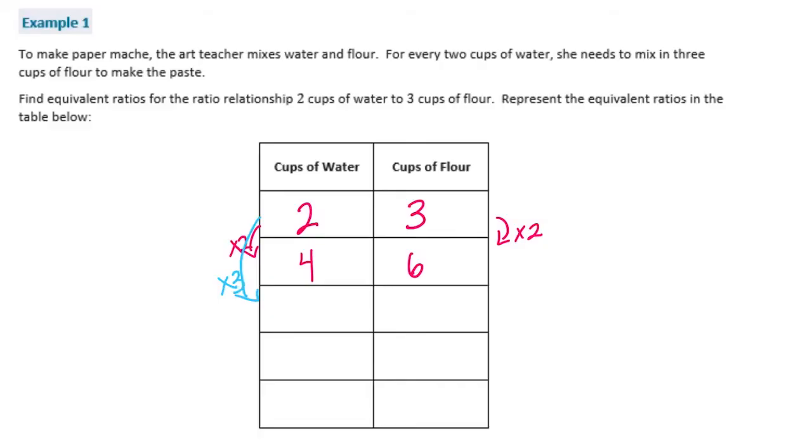If I want to do it again, so now let's multiply by 3. 2 times 3 is 6. If I multiply by 3 here, 3 times 3 is 9. So 6 to 9 is another equivalent ratio. Now let's multiply by 4, but let's multiply by 5. 2 times 5 is 10. 3 times 5 is 15. So 10 to 15 is another ratio.